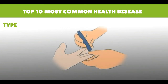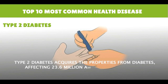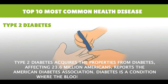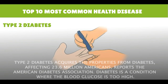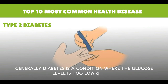Type 2 Diabetes. Type 2 diabetes is affecting 23.6 million Americans, according to the American Diabetes Association. Diabetes is a condition where the blood glucose level is too high or too low, leading to serious health complications.